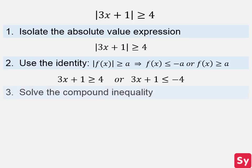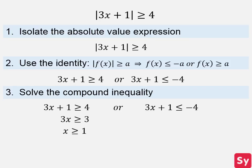Finally, we can solve the compound inequality. First, we will solve 3x plus 1 is greater than or equal to 4. We subtract 1 from each side, and then we divide each side by 3, and we get x is greater than or equal to 5 thirds.